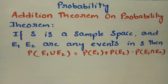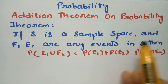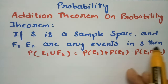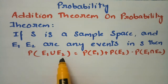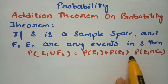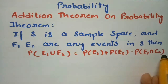Today's video is on the Addition Theorem on Probability. The theorem states that if S is a sample space and E1 and E2 are any two events in S, then the probability of E1 union E2 is equal to the probability of E1 plus the probability of E2 minus the probability of E1 intersection E2.